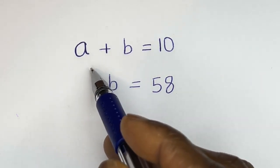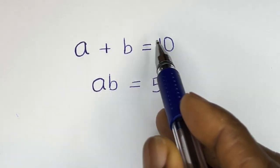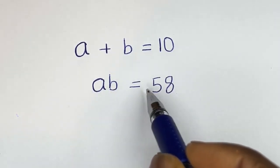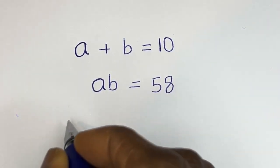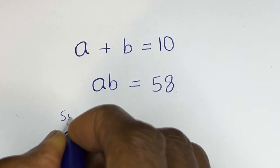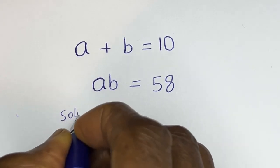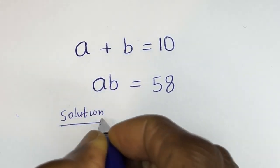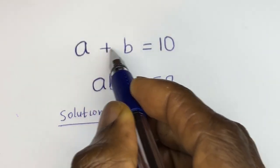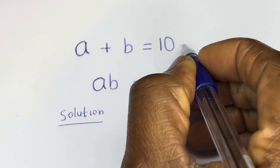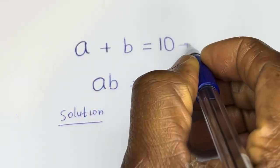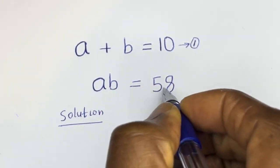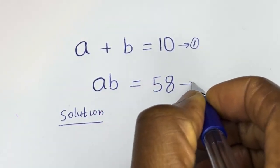Hello. How to solve for a and b in this equation: a plus b is equal to 10, and a times b is equal to 58. Solution. Let's call a plus b equals 10 equation 1, and ab equals 58 equation 2.